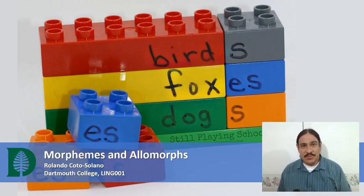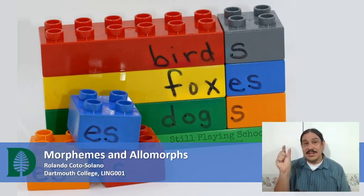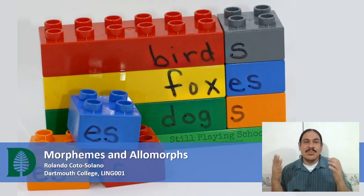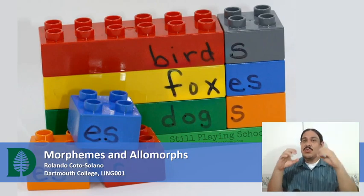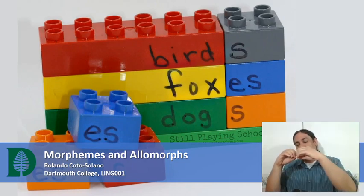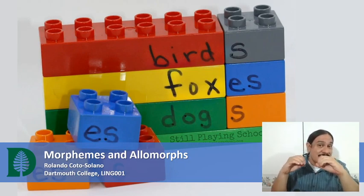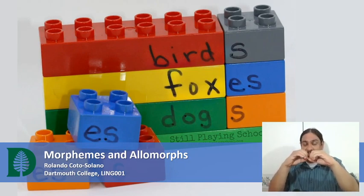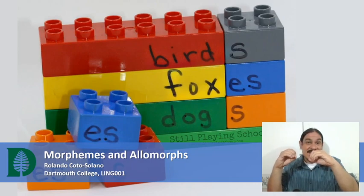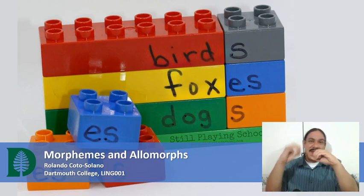This week we are studying morphemes, which are minimal units of meaning. For example, the word birds has two morphemes in it. One of them is bird, which tells you the kind of creature it is. The other morpheme is the plural, which shows up as an S, and it tells you that there's many birds.